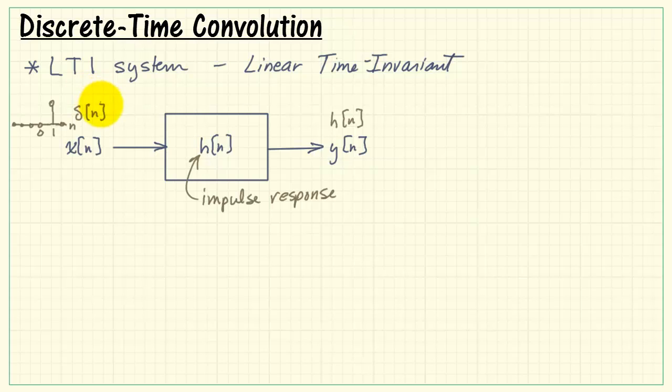If I delay this impulse by one place, delta of n minus 1, because the system is time invariant, that means we get the same impulse response, but just delayed by the same amount.